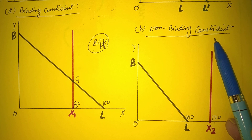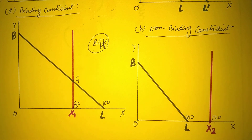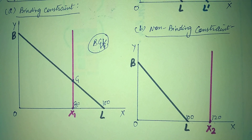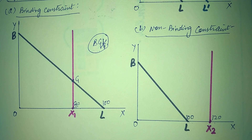So this was about the effect of tax, subsidy and rationing on the budget line. For complete detail of the indifference curve chapter, must watch all the seven videos. Thank you for watching this video.